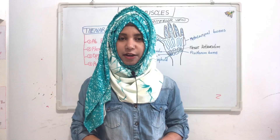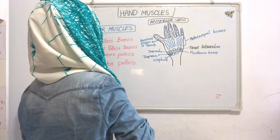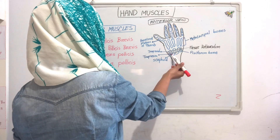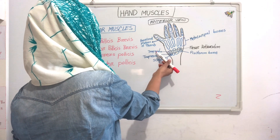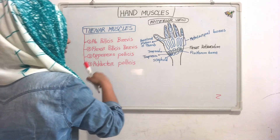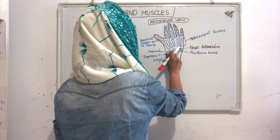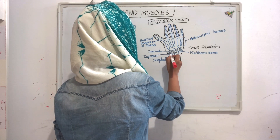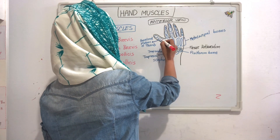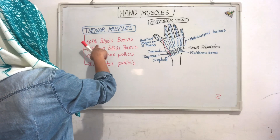Now we will see our thenar muscles in a diagram. This is an anterior view. We can see the proximal phalanx of the thumb, metacarpal bones, flexor retinaculum, scaphoid, trapezoid, and pisiform. First we will see our abductor pollicis brevis. Its origin is from the tubercle of scaphoid, trapezoid, and flexor retinaculum. Its insertion is into the base of the proximal phalanx of the thumb.